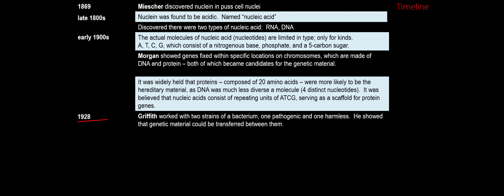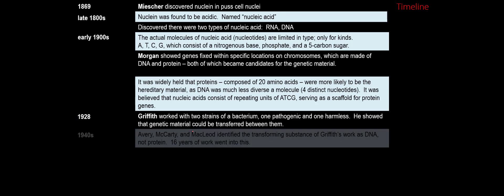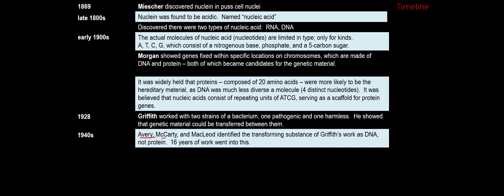By 1928, people were really digging into understanding what the inheritable material was made out of. After World War I there was a huge influenza epidemic, and Griffith was hard at work trying to develop a vaccination to save lives. In his work he discovered a system where the genetic material could be studied. By the 1940s, Avery and his colleagues McCarty and MacLeod identified that Griffith's transforming substance turned out to most likely be DNA. They worked for 16 years on this.